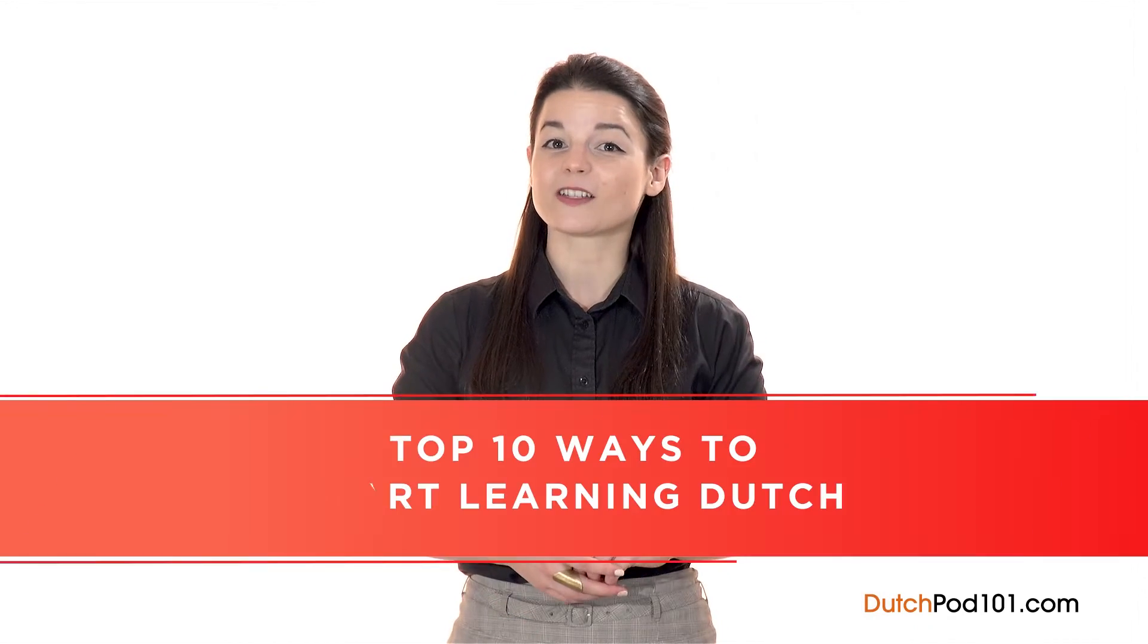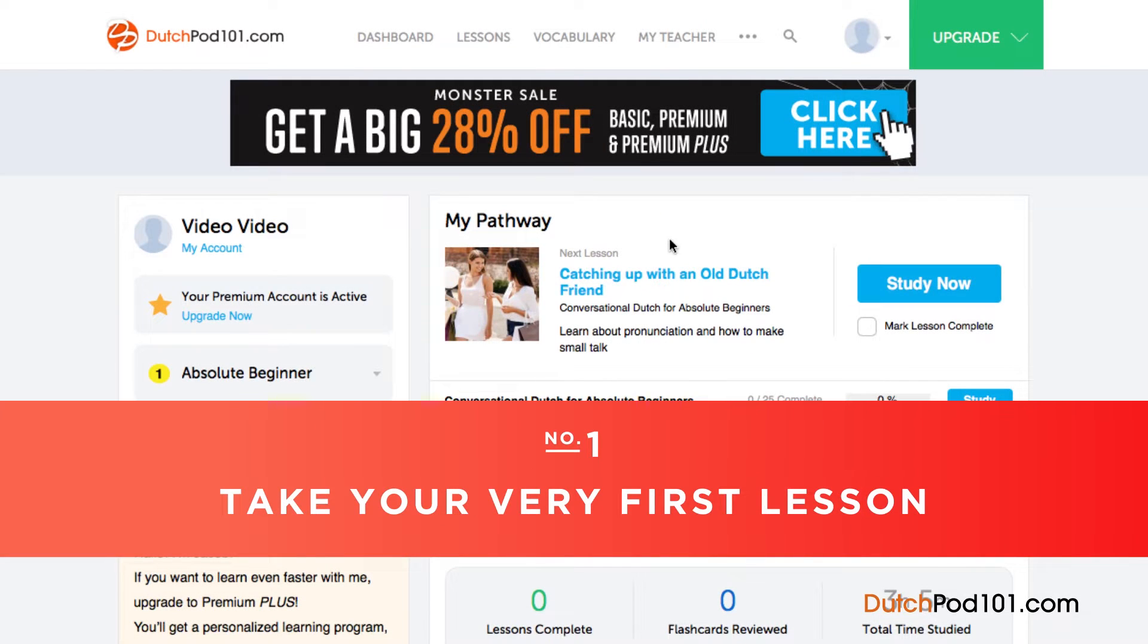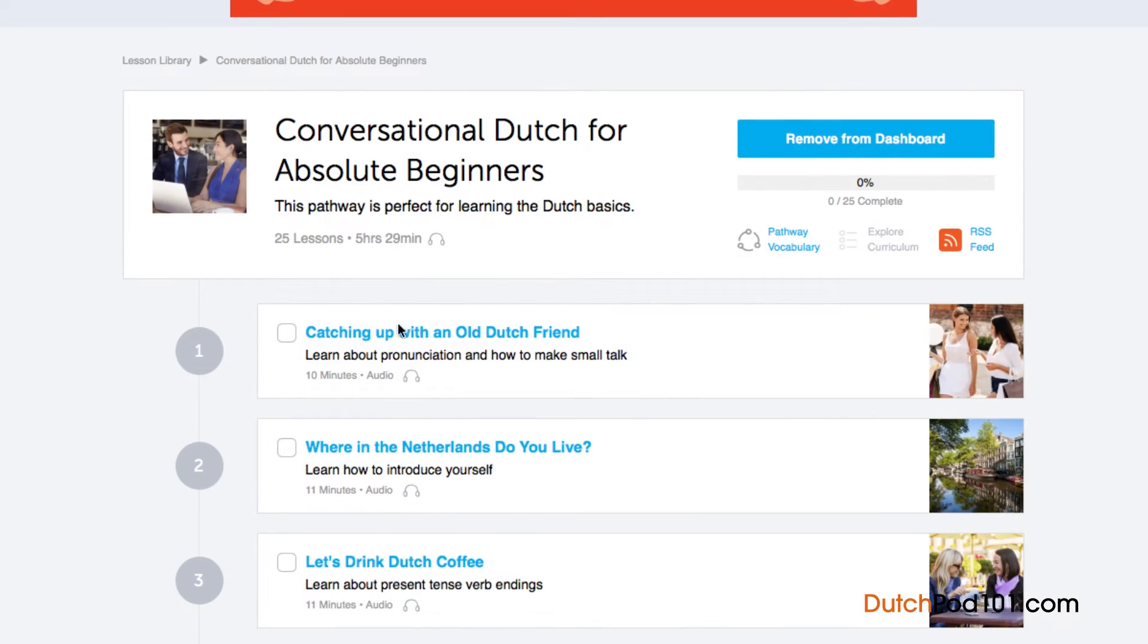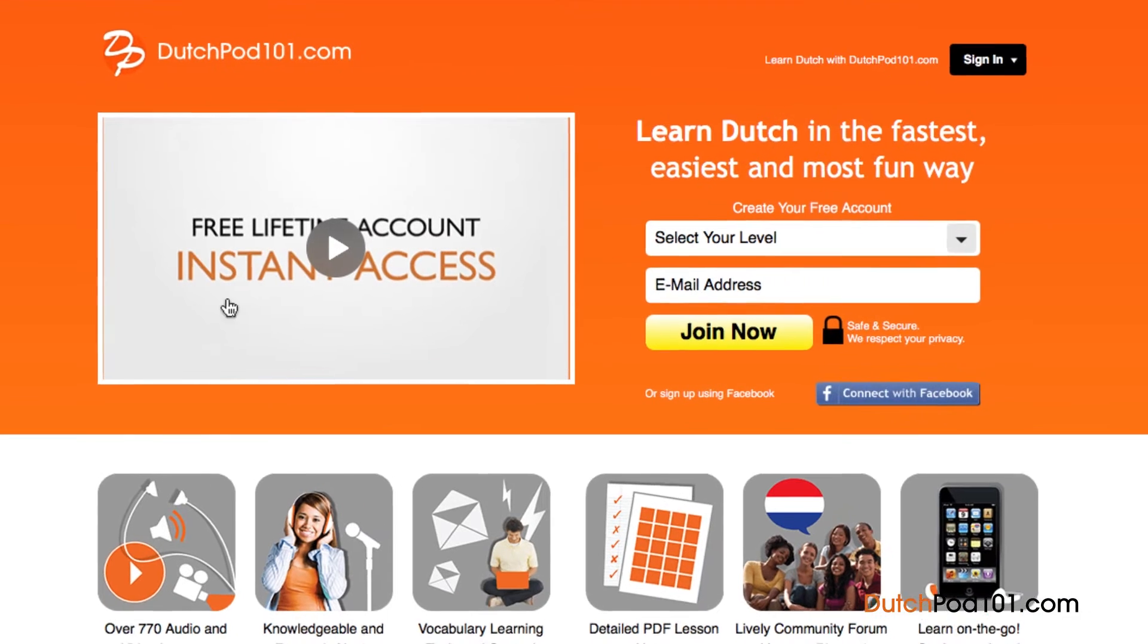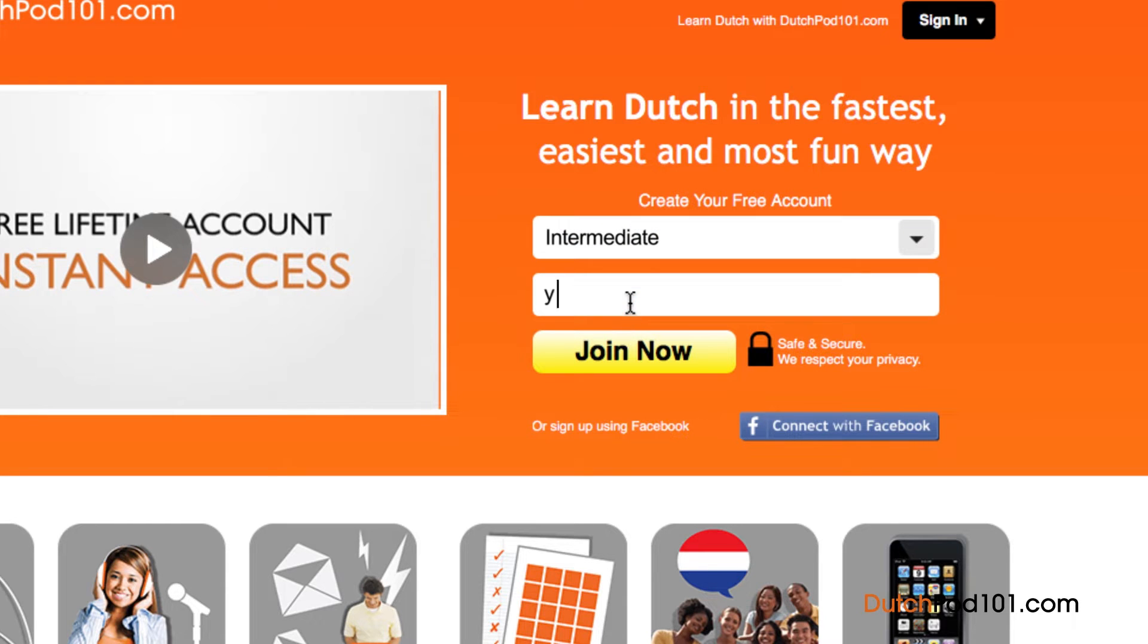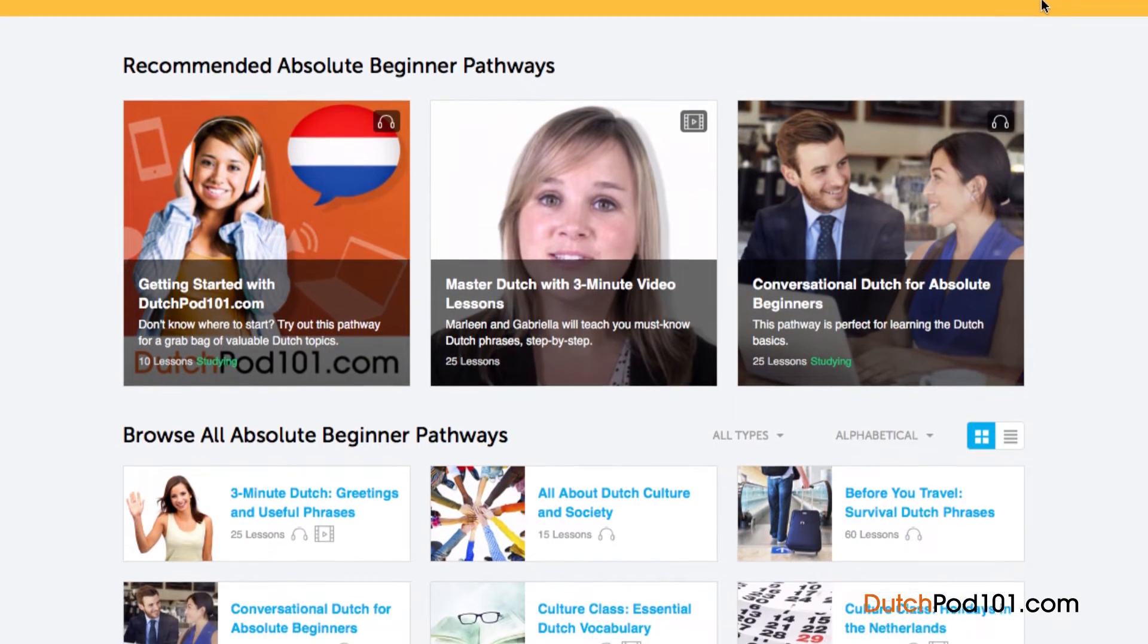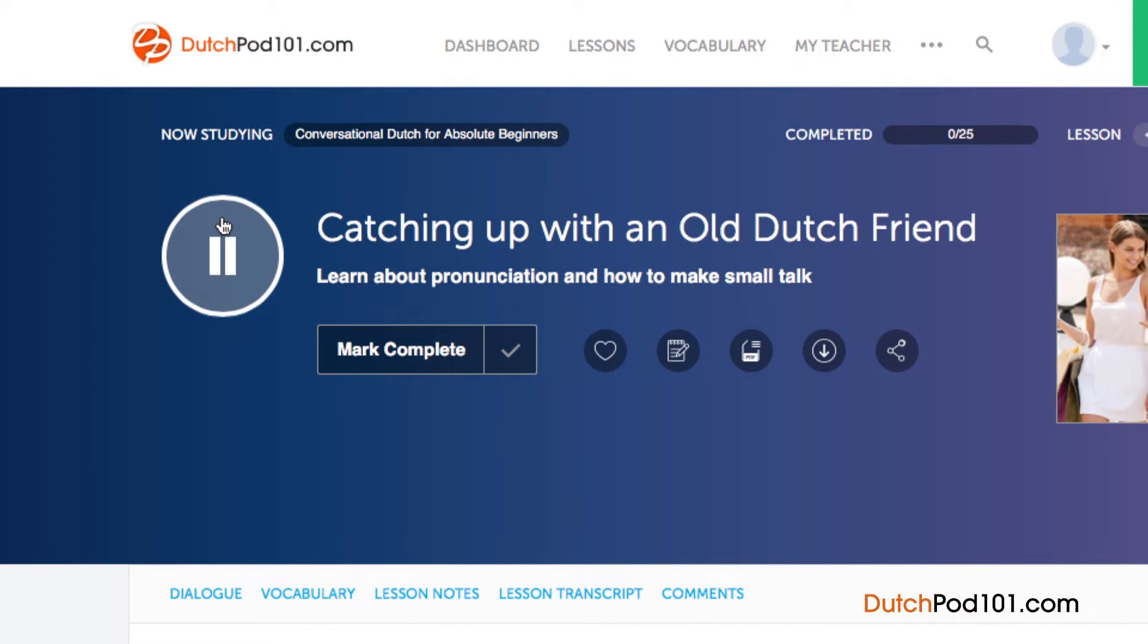In this video, I'll show you the top 10 ways to get started. So, let's begin. Number one, take your very first lesson. Access any audio or video lesson on dutchpod101.com and just press the play button to get started. Don't have an account? Don't worry. Just go to the sign-up page to create an account. It takes less than 30 seconds, and it's free. We have thousands of audio and video lessons covering a variety of topics, like grammar, pronunciation, listening, and reading. Just click on the play button on any lesson and start learning.